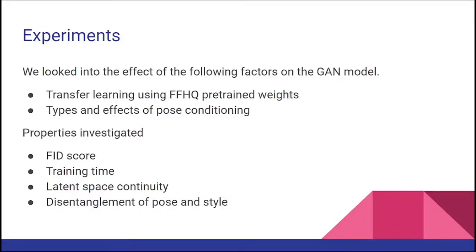We looked into some properties of models trained using the Try-On GAN method and asked two questions. First, what are the effects of transfer learning? For this, we used FFHQ pre-trained weights. Second, what are the effects of various pose conditioning methods and pose conditioning in general? Keeping these two questions in mind, we examined FID score, training time, latent space continuity, and disentanglement of pose and style in the trained models.